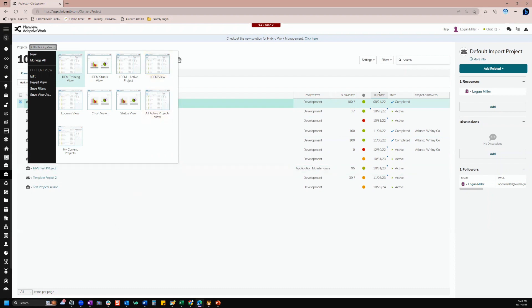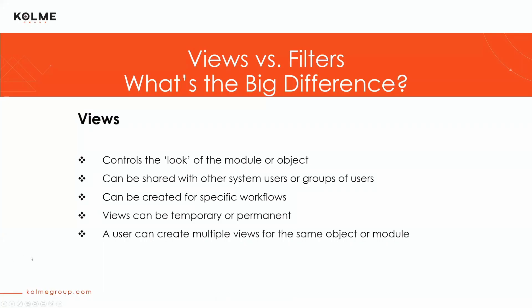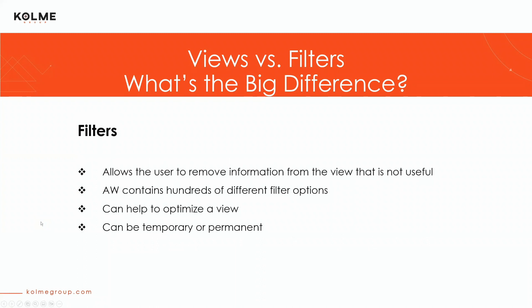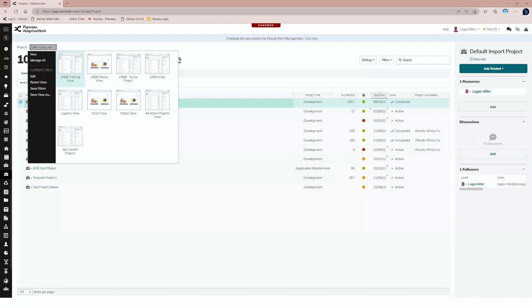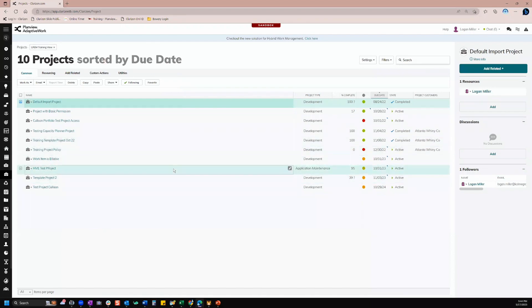Adaptive Work is an extremely robust system, and the downside to that is that it can be very overwhelming to the user if every project, RAID item, or task is available to view. In a very busy, active system, there can be hundreds of these records, and imagine having to sift through each one to find the exact one that you need to work on that day. This can cause some serious frustration and inhibit adoption, so we mitigate this by using filters. A filter in Adaptive Work allows you to remove information that you don't want to see and only displays the information that you do want to see. For example, if I only want to see projects in my project module that are in the active state, I can absolutely take these others out.